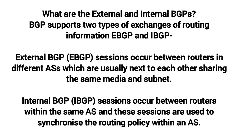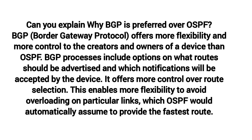What are external and internal BGP? BGP supports two types of routing information exchange: EBGP and IBGP. External BGP (EBGP) sessions occur between routers in different autonomous systems, which are usually next to each other sharing the same media and subnet. Internal BGP (IBGP) sessions occur between routers within the same AS and are used to synchronize the routing policy within an AS.